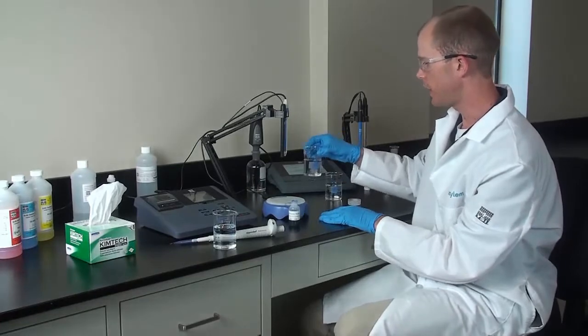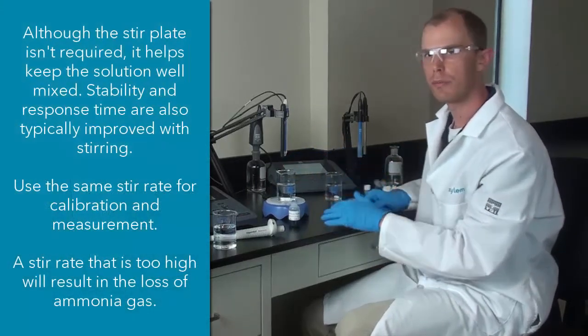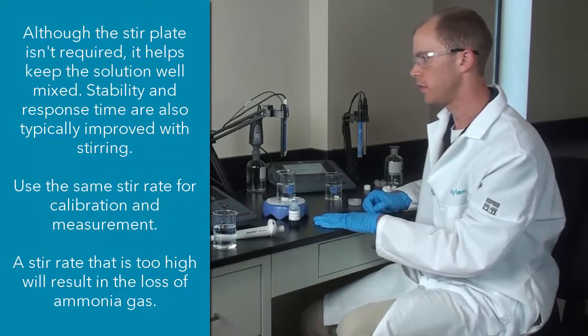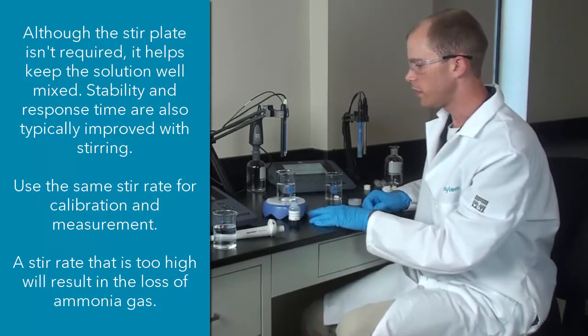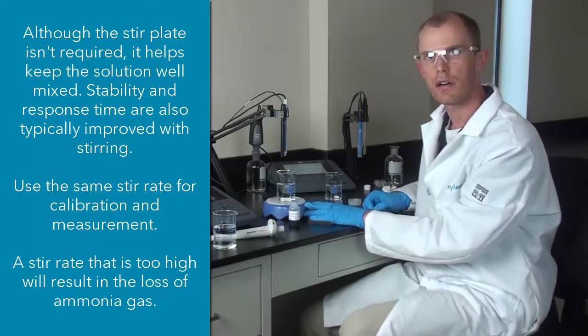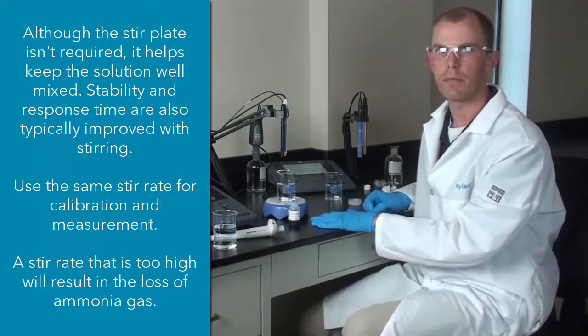So then we will place our 10 mg per liter standard on a stir plate, and you will always want to make sure that your samples are well mixed. So it is best to use a stir plate whether you are calibrating ammonia or nitrate or any other ISE. So you don't need to have a high RPM setting on your stir plate just because it is going to cause your ammonia to escape faster.